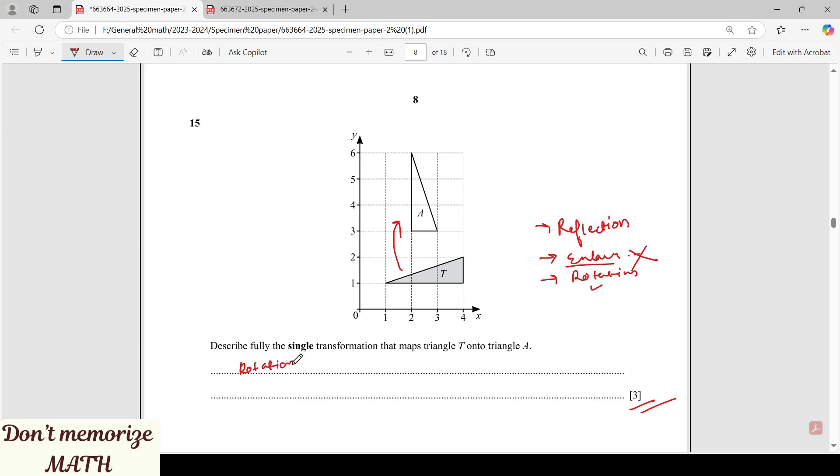Keep your tracing paper and you can see when this side went here, it rotated and went here. So the angle is 90 degrees. We are moving in the clockwise direction.